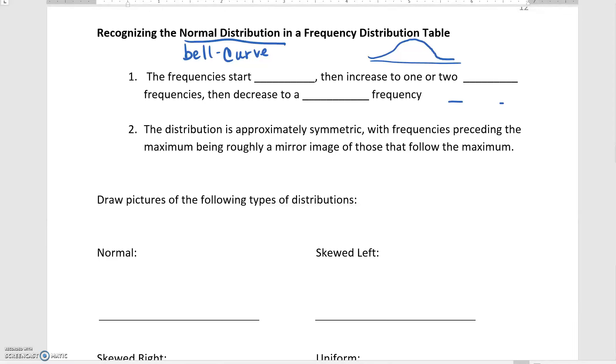The two important features to know about a normal distribution: the frequencies start low, then increase to higher frequencies, and then decrease to a low frequency again. And the distribution is approximately symmetric, meaning it goes up to the middle and then comes back down in the same or very similar way.